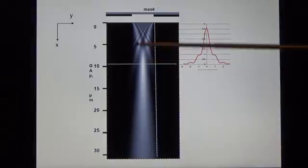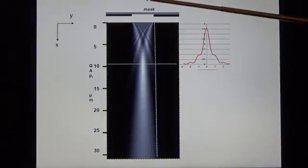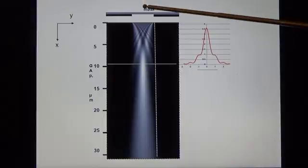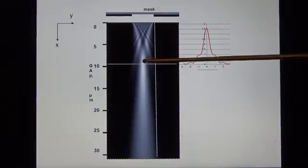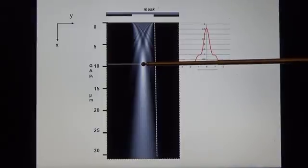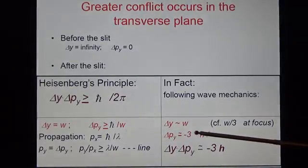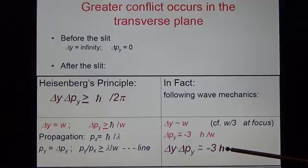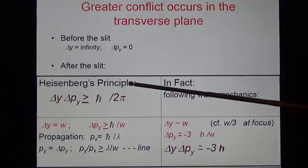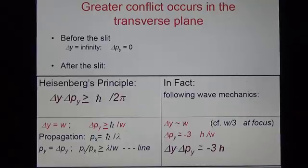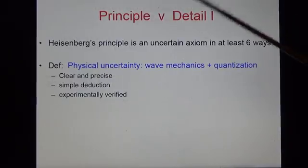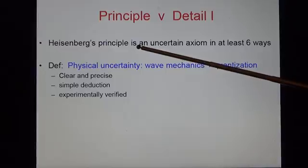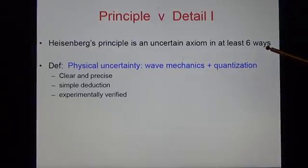In fact, Fresnel knew a hundred years before the photon was quantized that the slit pinches the wave packet. The lateral uncertainty has an experimental value minus 3h, which is far beyond Heisenberg's limit. It follows that Heisenberg's principle is an uncertain axiom in at least six ways.